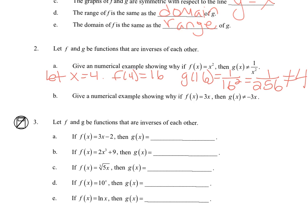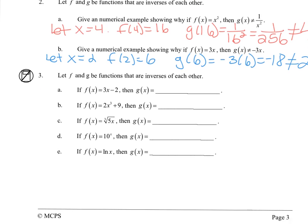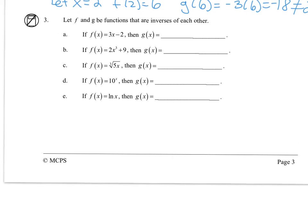For part b, let's choose x equals 2. When we plug that into f, we get 6. So when I plug 6 into g, I should get 2, but instead we get negative 18, which is not 2.